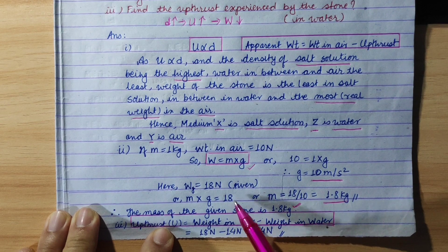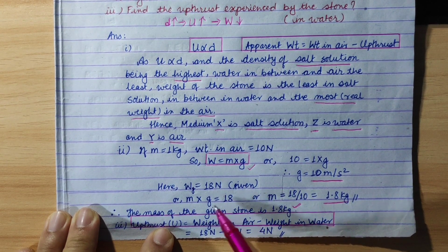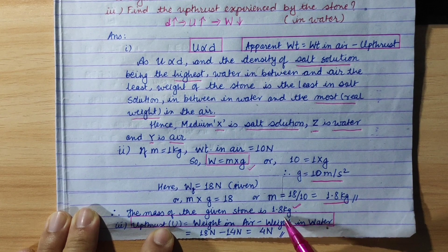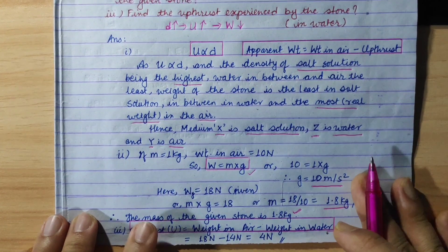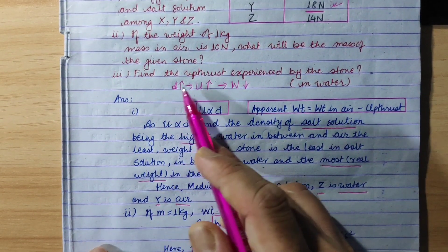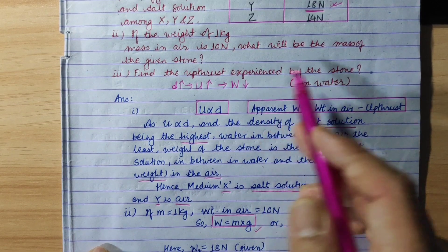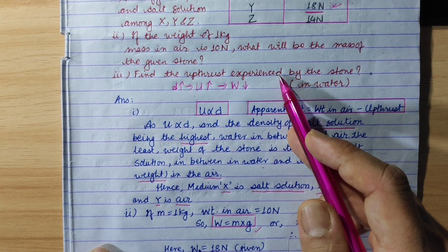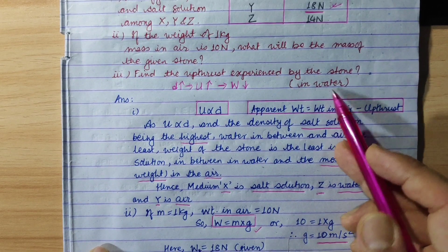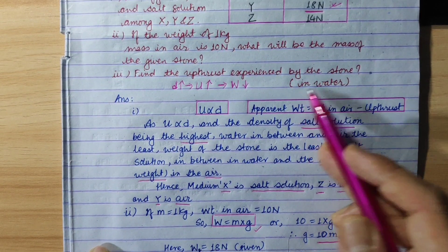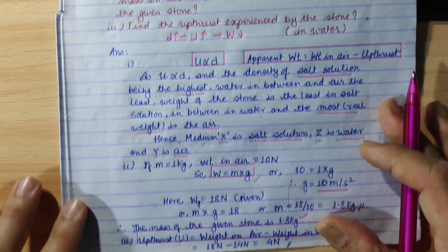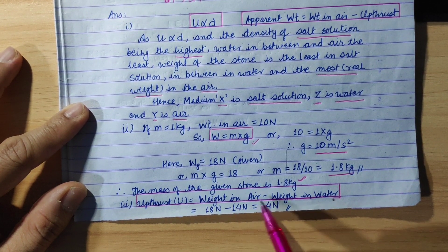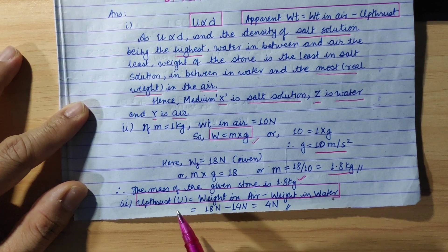Now we are at the 3rd part: Find the upthrust experienced by the stone in water. The upthrust formula is: upthrust equals weight of object in air minus weight of object in water. So, upthrust is given for when the stone is in water.